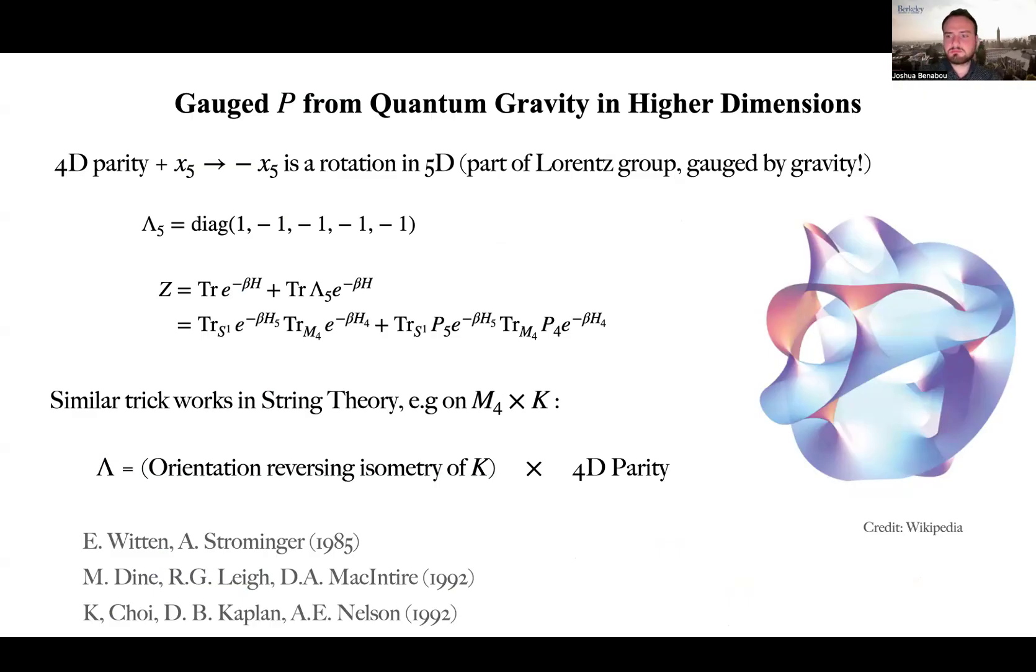In our paper, we present a simple example where parity is realized as an element of a continuous gauge group of a higher dimensional theory. We present a simple example in five dimensions of a pure SU-3 gauge field gauge theory with the spacetime compacted on a circle.